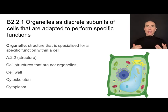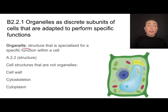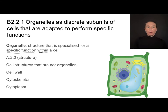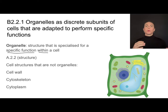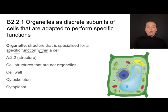An organelle can be defined as a structure that is specialized for a specific function within a cell. So it's got to be something within a cell and it has to have a specific function. These are covered in much greater detail in A2.2, which is all about cell structure. But for now, we'll just go over basic features. So any cell structure that has a specific function within a cell, like the mitochondria or the rough ER, those are organelles.